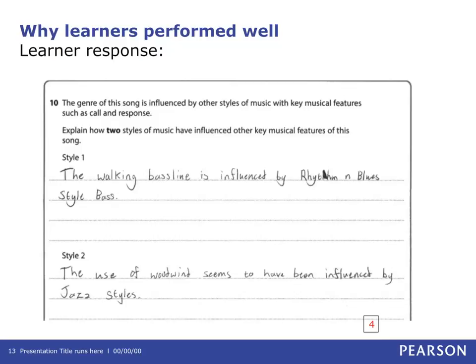Question 10. This question was very successful and most learners were able to access the marks. Those who had prepared and had some knowledge of this genre were very successful and were able to provide detailed descriptions of how the style influenced rock and roll. This is an exemplar response where the learner has explained the influence of both rhythm and blues and jazz, gaining a full four marks.